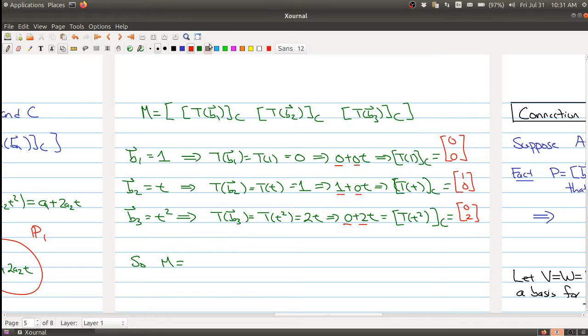So then when I put all these pieces together, this becomes my first column. This (1, 0) becomes my second column. And (0, 2) becomes my last column. All right, so that gives us my matrix M.